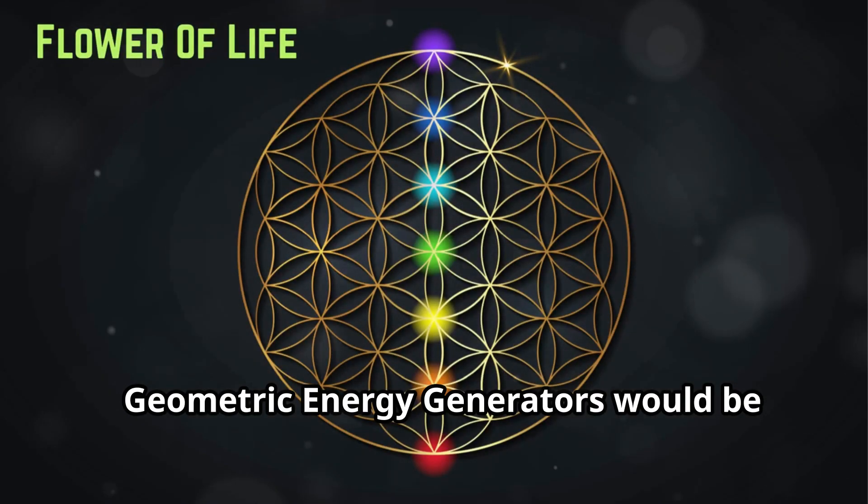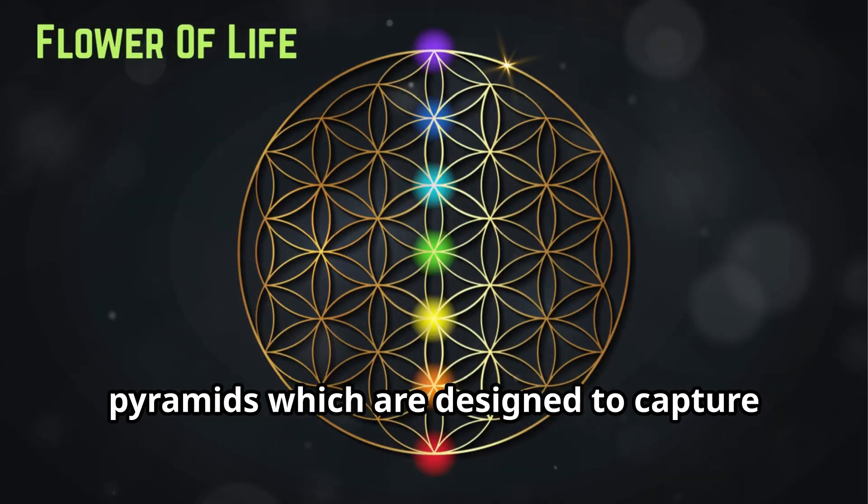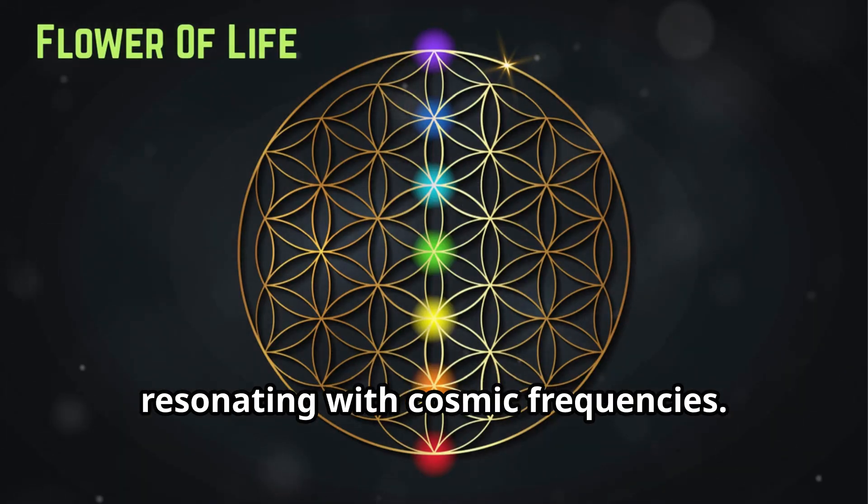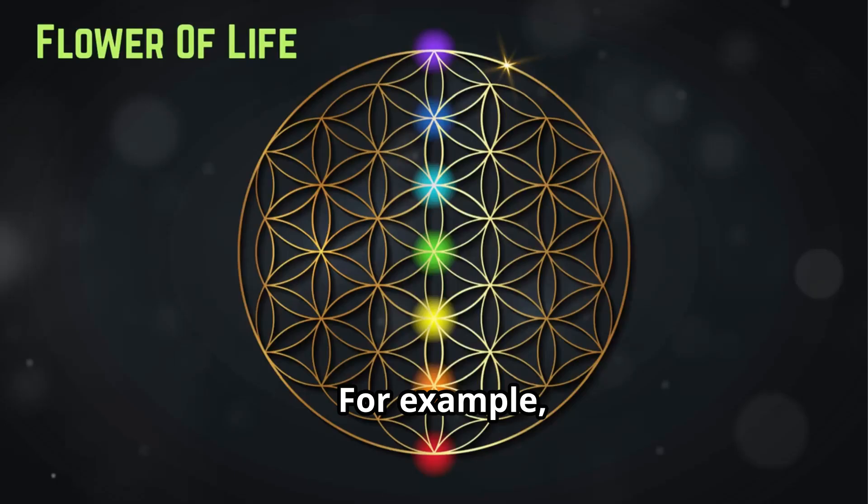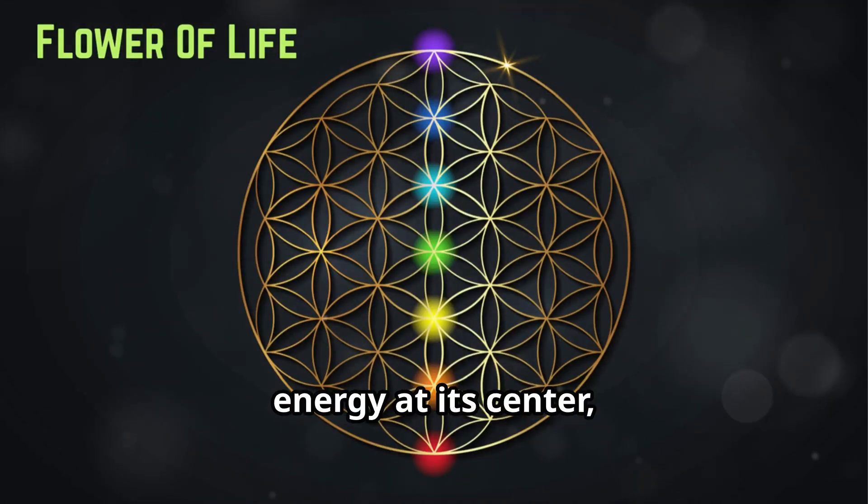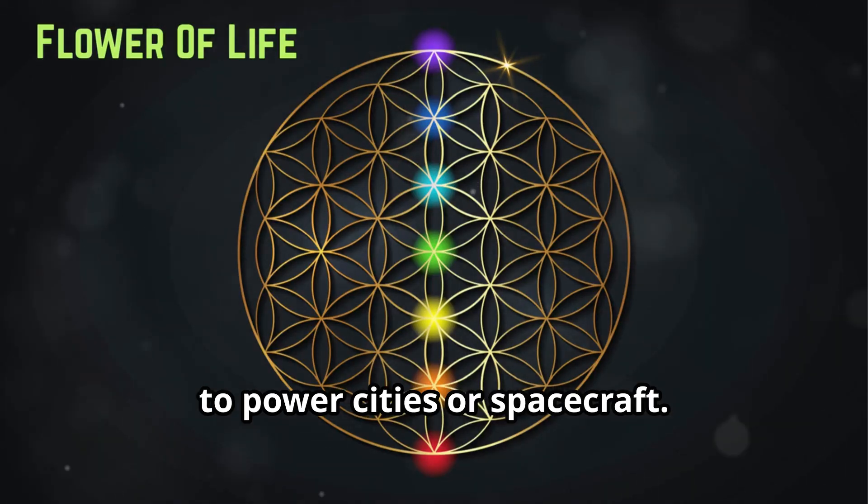Geometric energy generators would be devices shaped like platonic solids or pyramids, which are designed to capture ambient universal energy or vril by resonating with cosmic frequencies. For example, a spherical generator might concentrate energy at its center, as described in radiesthetic studies, to power cities or spacecraft.